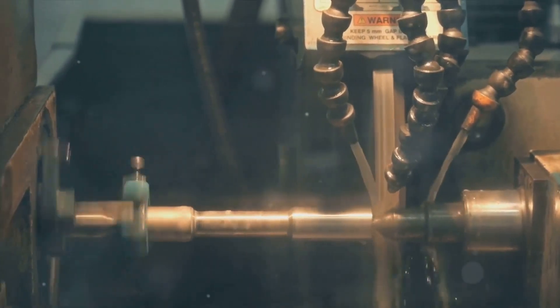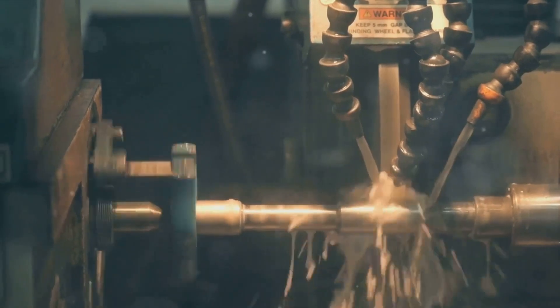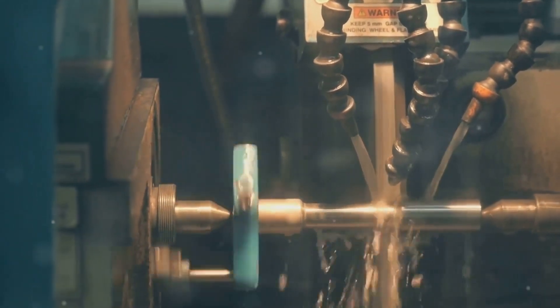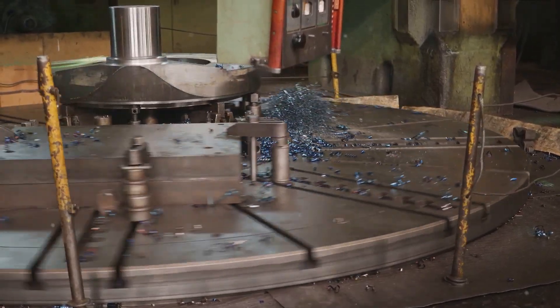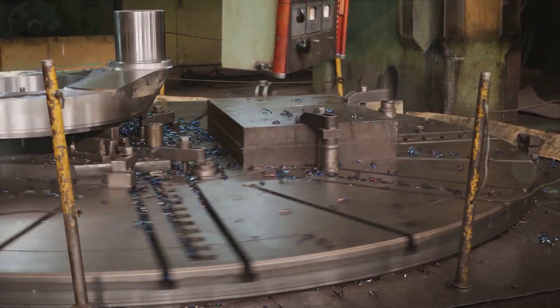Last but certainly not least, we have the wadding machine. This machine ensures that every product leaving the plant is sealed perfectly, ready for use. It's like the final check, the seal of approval if you will, that guarantees quality and reliability.